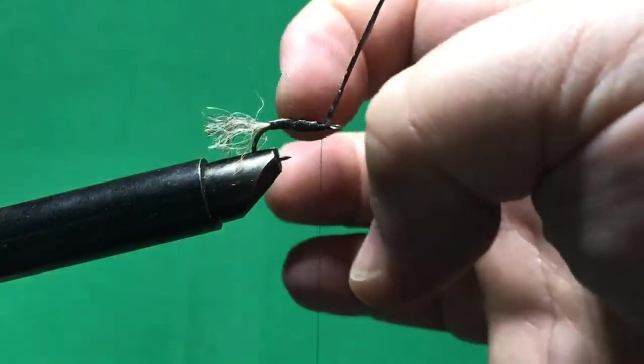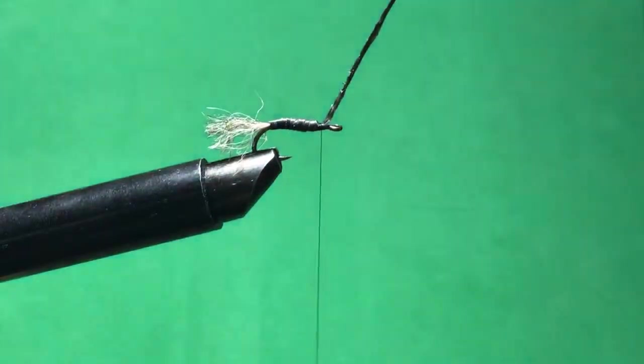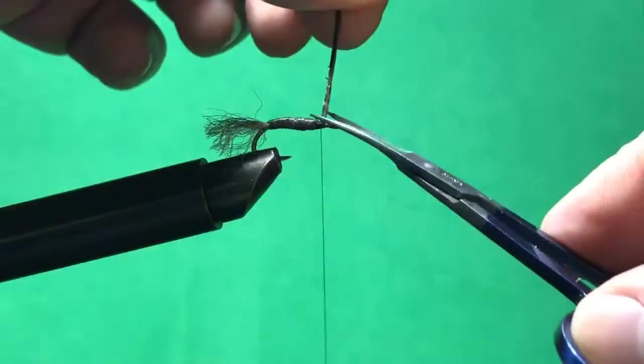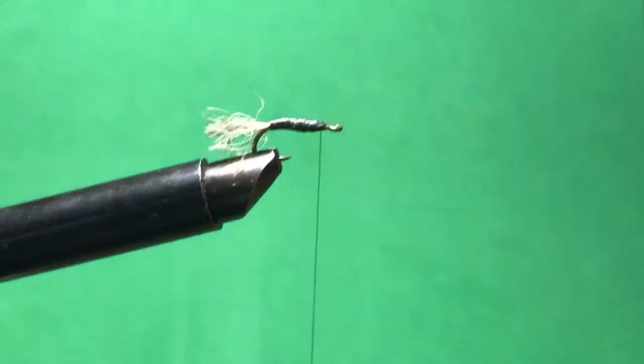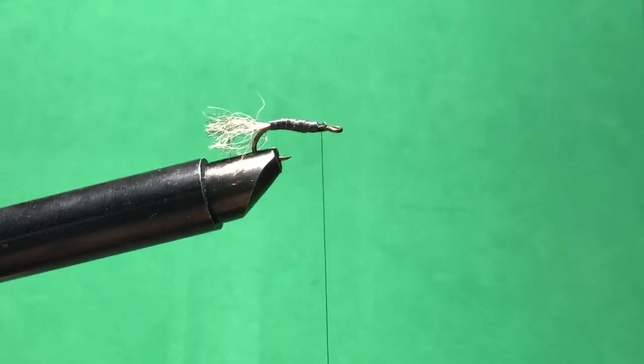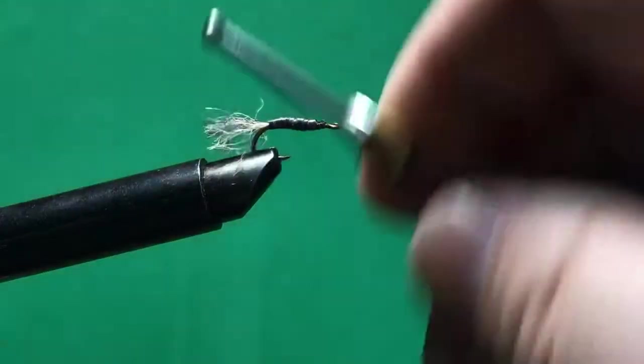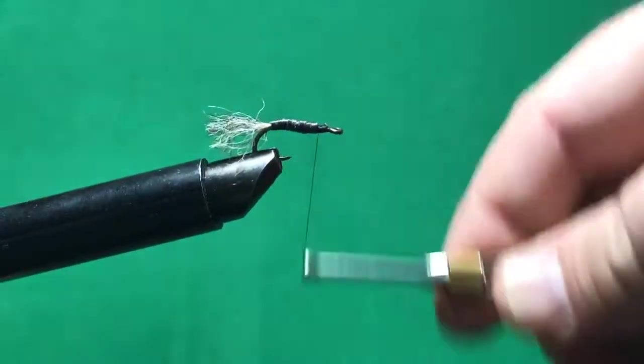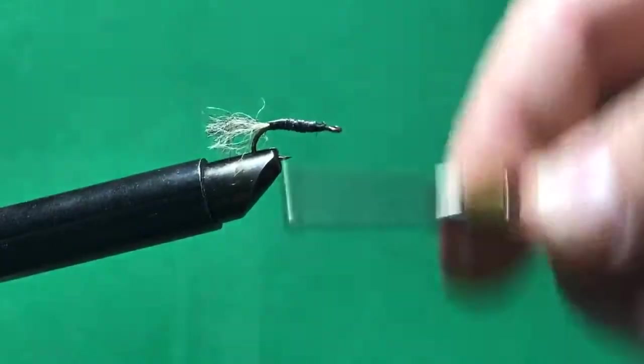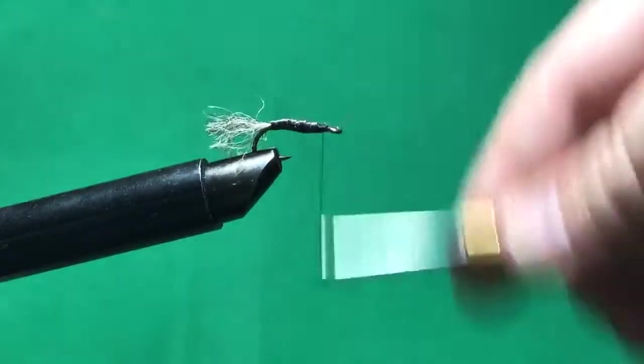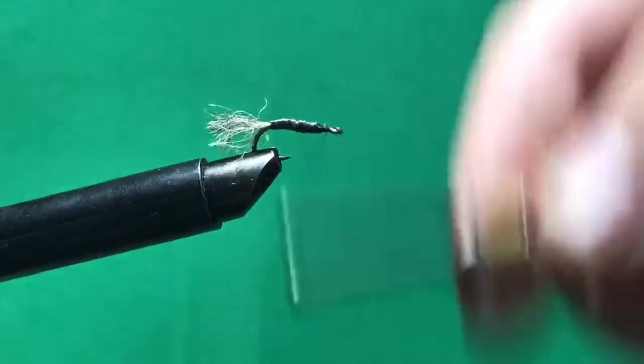And I could have tied in a piece of wire to help that be even more shiny. But I don't think it's necessary here. But I do want to put a good layer of thread here to make sure that doesn't come untied because that stuff is so slick.